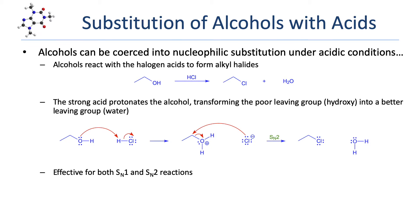In this example, we see an SN2 mechanism occurring because we started with a primary alcohol. Had we started with a tertiary alcohol, the reaction would have proceeded through an SN1 mechanism, again preceded by that protonation step.